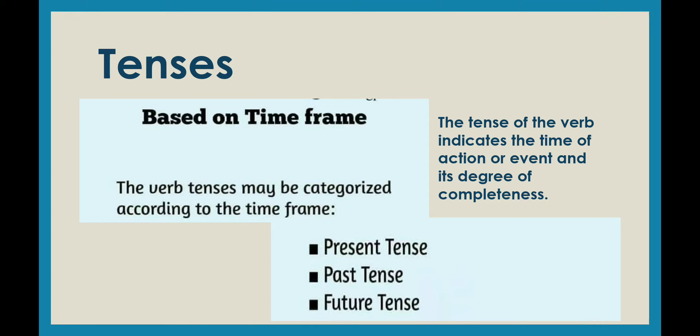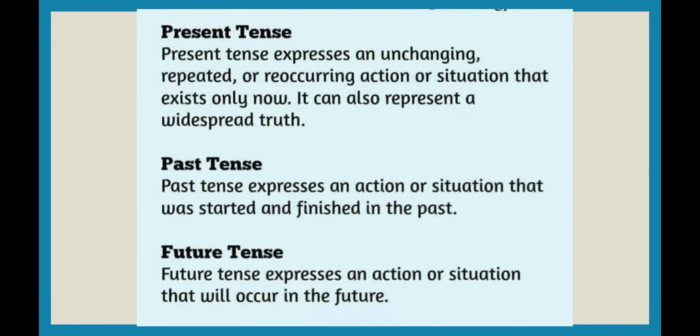If the action is taking place now, that means present tense. If it has already been done, that is past tense. Or if it will take place in the future, that is future tense. Now, present tense expresses an unchanging, repeated, reoccurring action that exists only now.